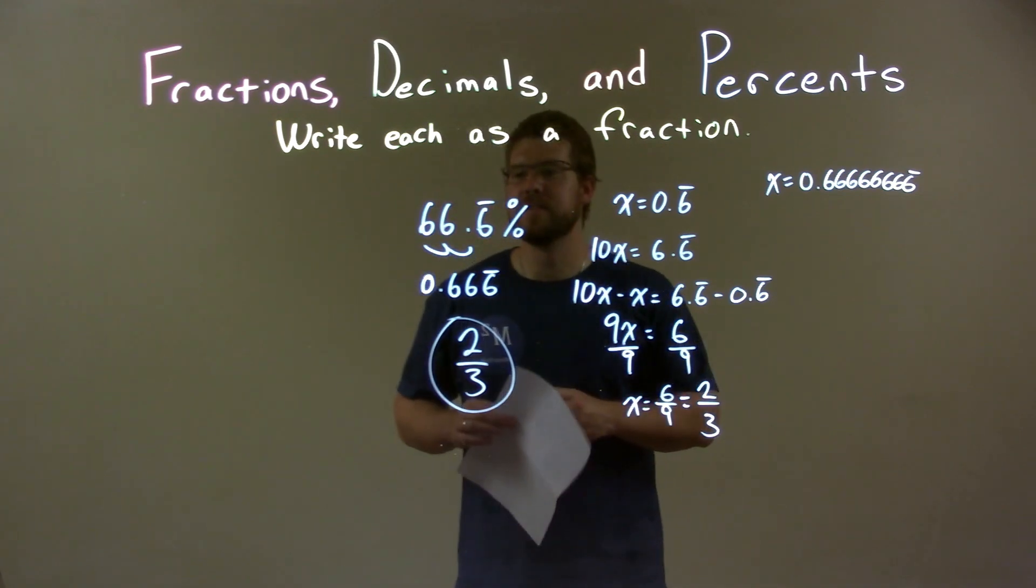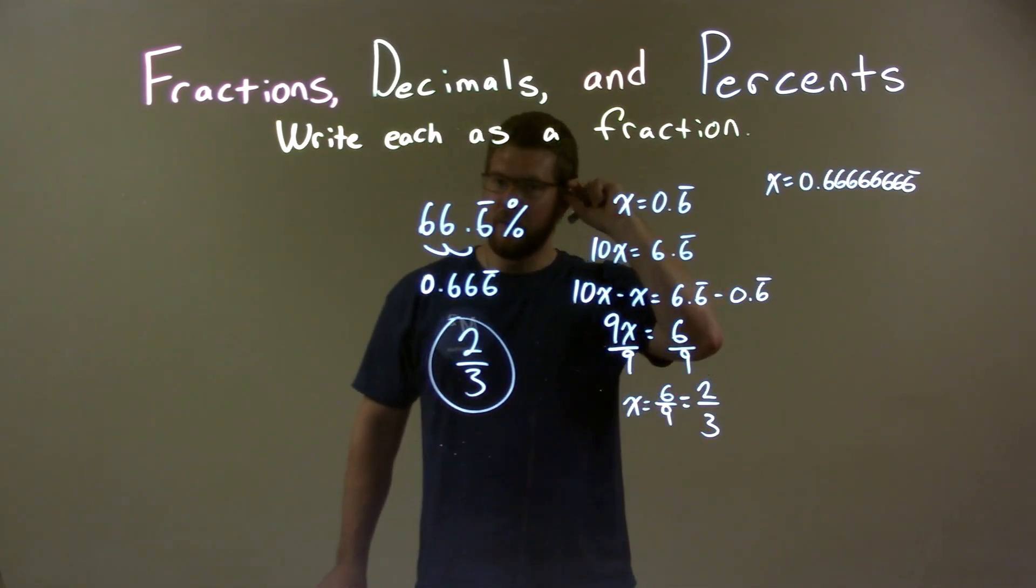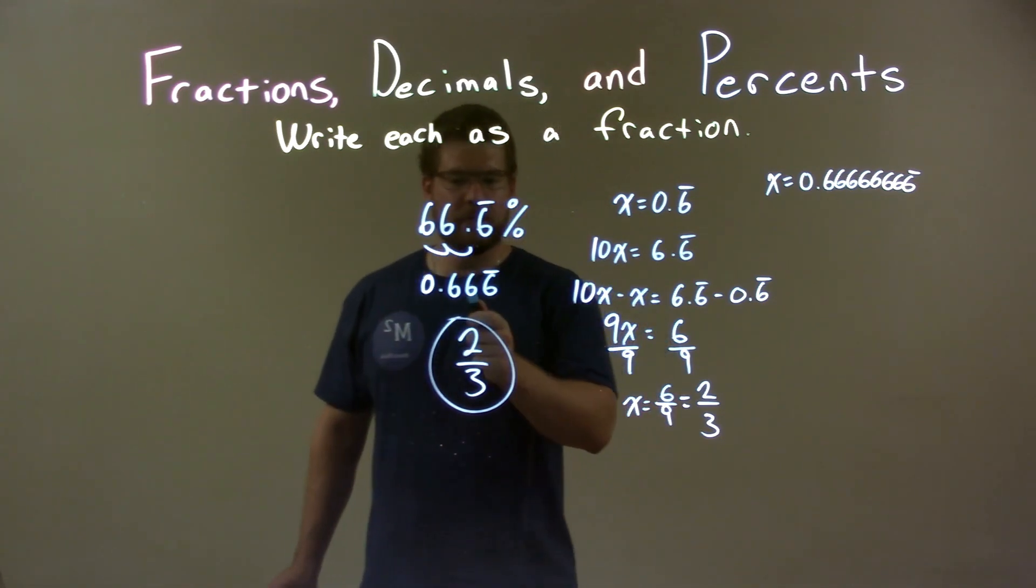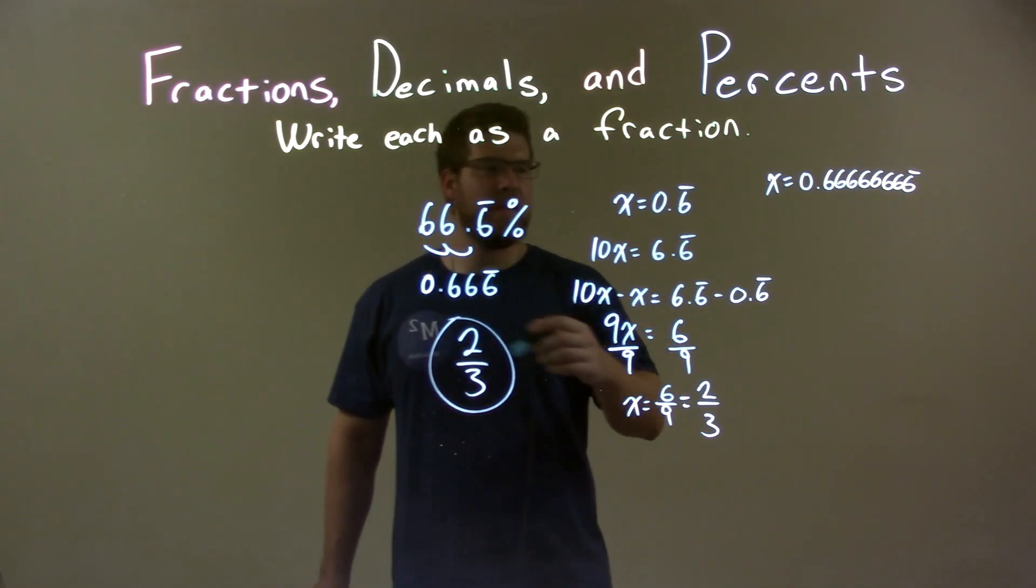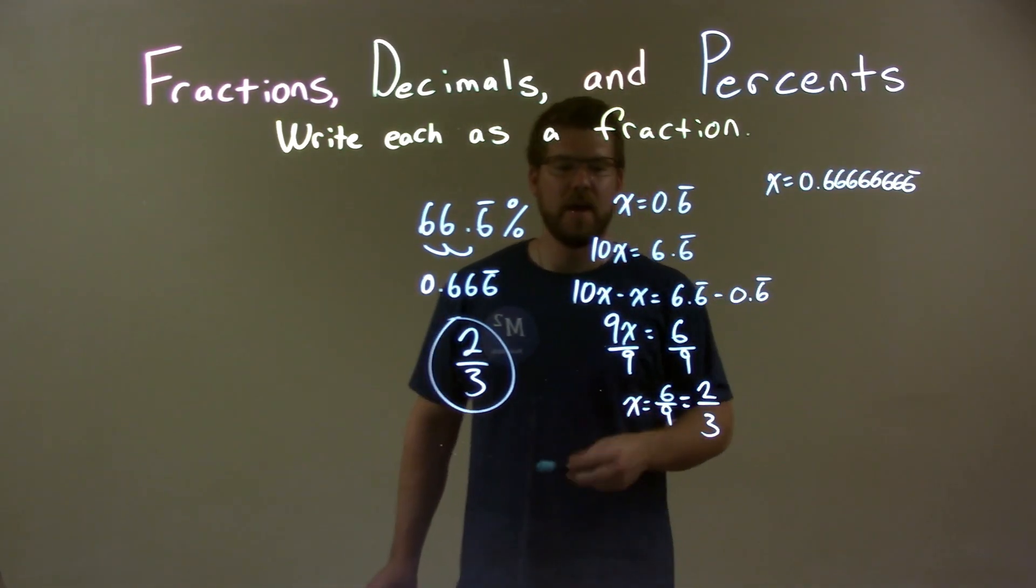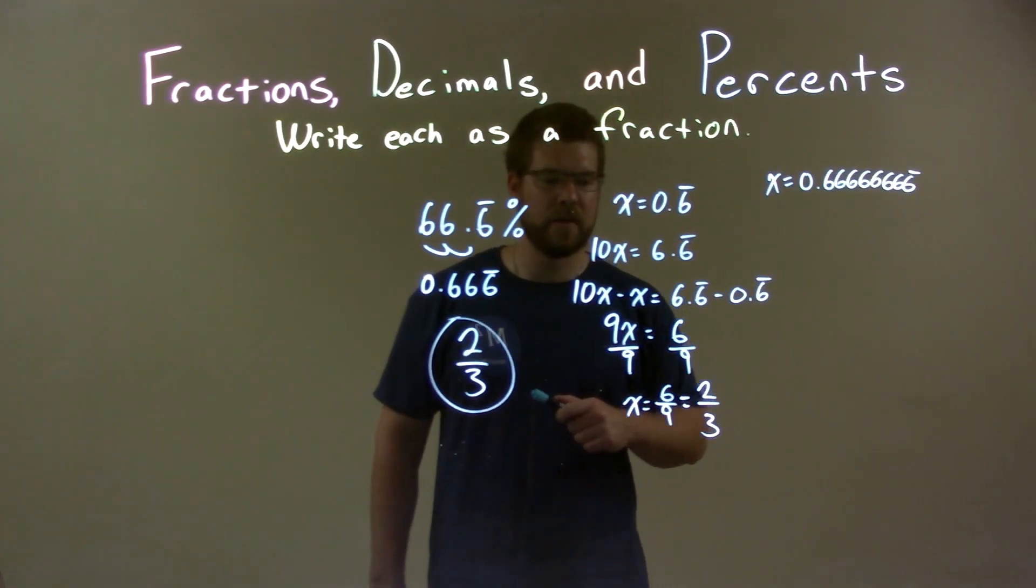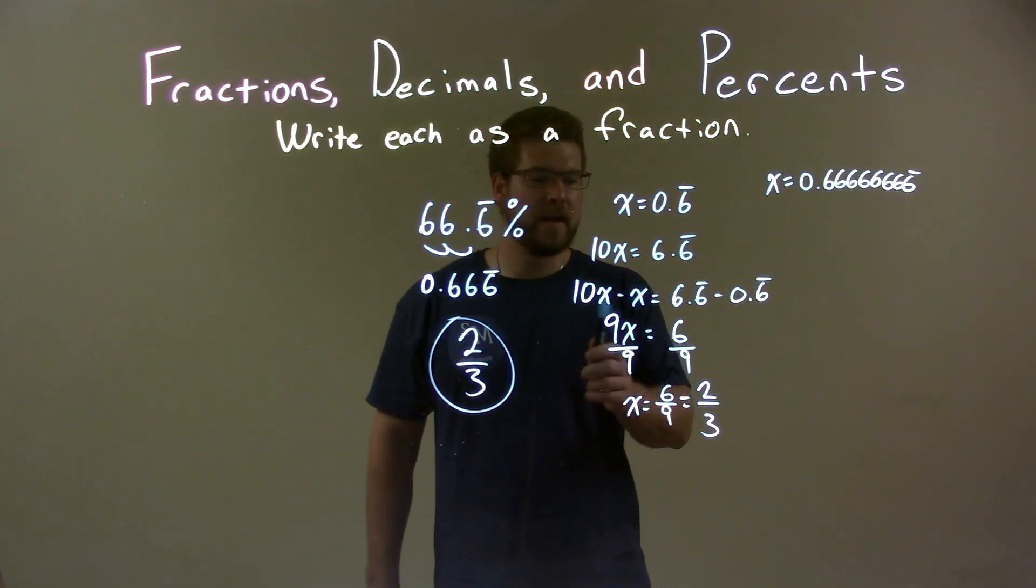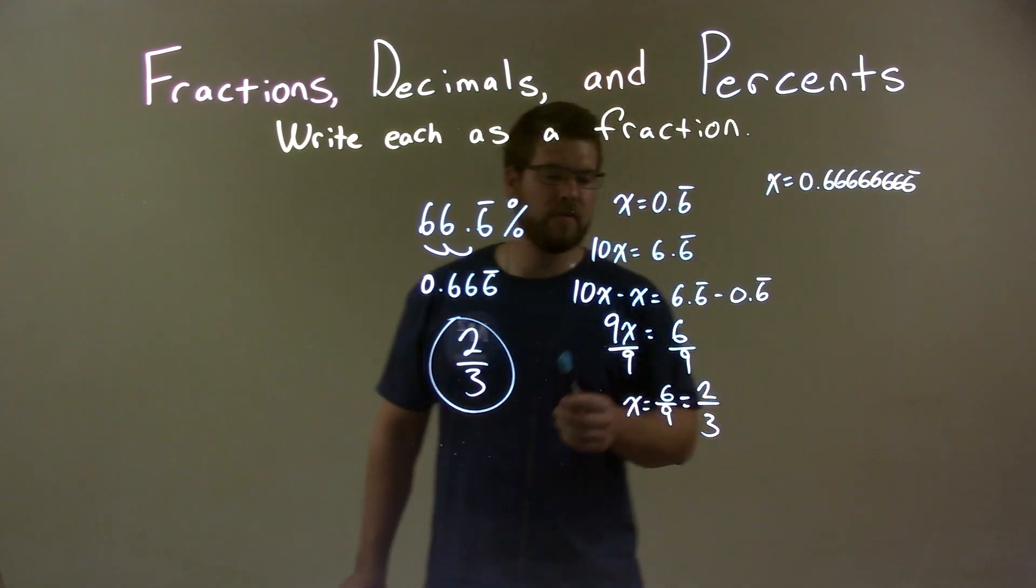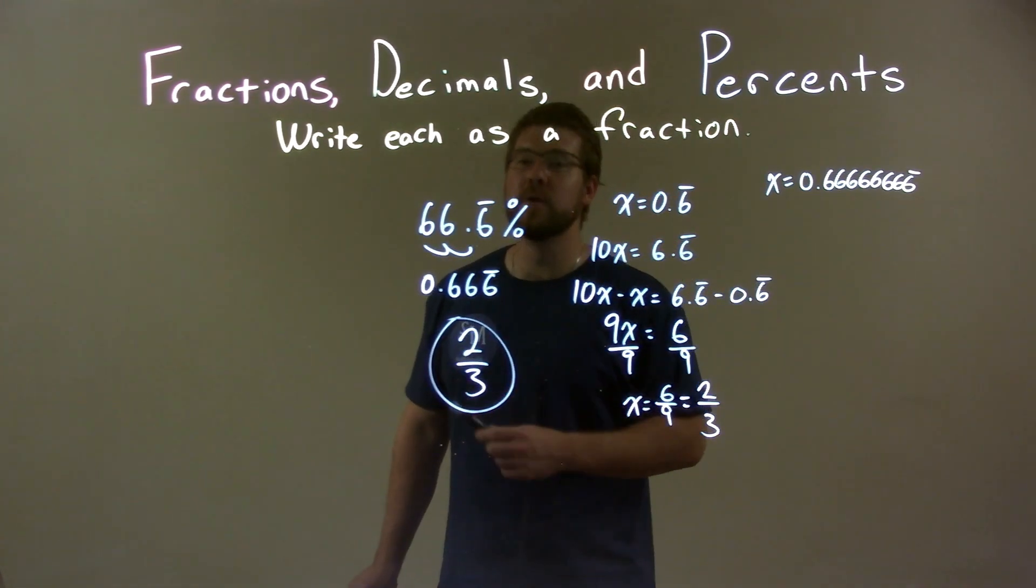So quick recap, we're given 66.6% repeating, and we can write that as a fraction. I first converted it to a decimal, then I set that equal to x, and then I had 10x equal to 6.6 repeating. I did 10x minus x, which was 6.6 repeating minus 0.6 repeating. I then simplified that and got 9x equals 6. I divided both sides by 9, then simplified and got our final fraction of 2 thirds.